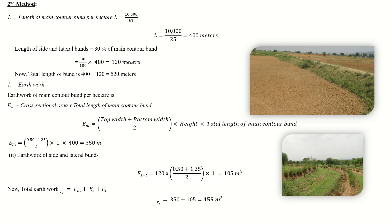Another method: the simple length of the bund per hectare equals 10^4 divided by the horizontal interval. With horizontal interval already given as 400 meters, we get the length of the bund. Due to construction of side bunds and lateral bunds, some area is not available for cultivation. We take 30% of the main bund length: 30/100 × 400 = 120 meters. So total length equals 400 plus 120.